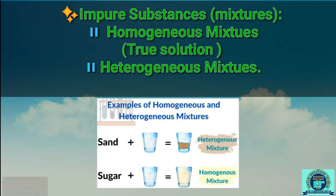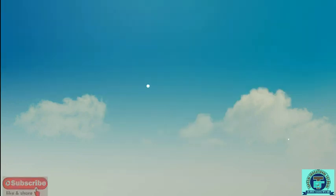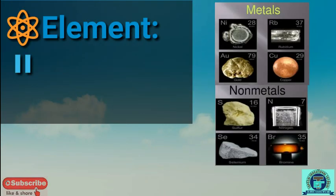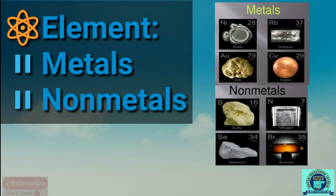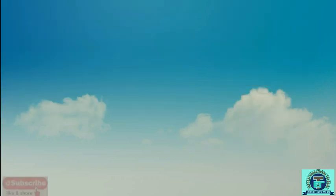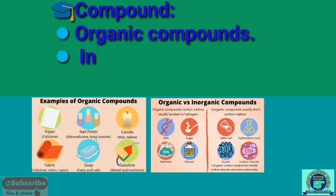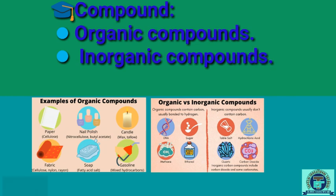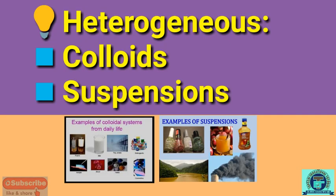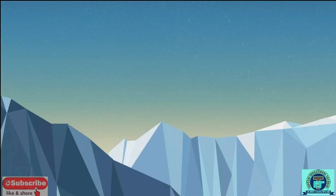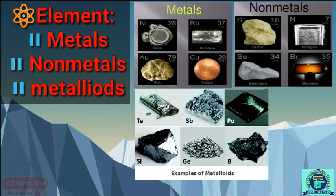Impure substances are further classified into homogeneous mixtures, meaning true solutions, and heterogeneous mixtures. Elements are classified into metals, non-metals, and metalloids. Compounds are classified into organic compounds and inorganic compounds. Heterogeneous mixtures are classified into colloids and suspensions.